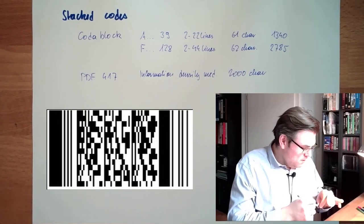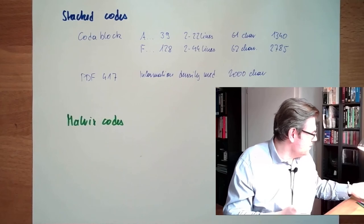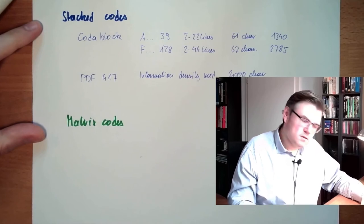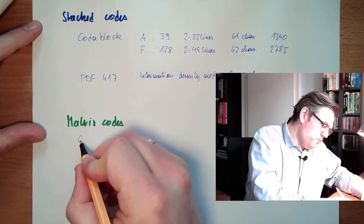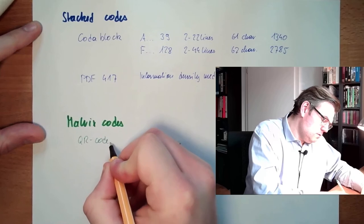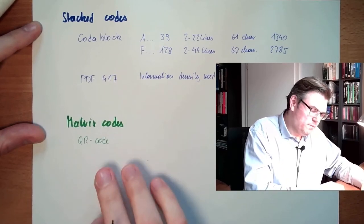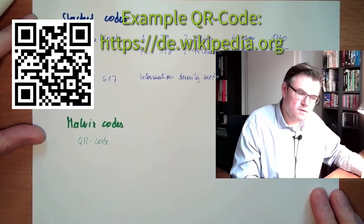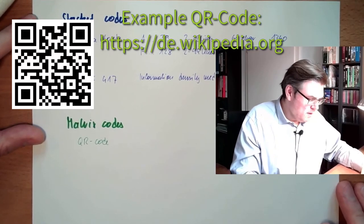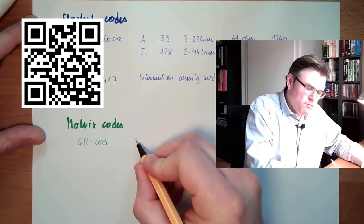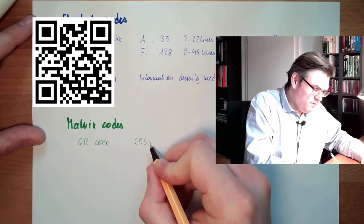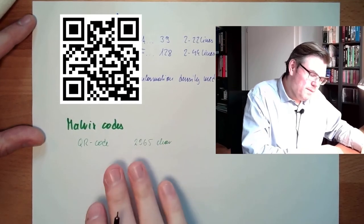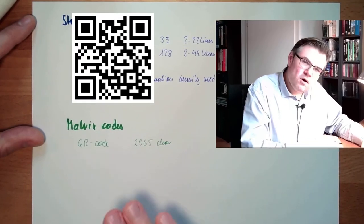One good example of a matrix code, because everybody knows it, is the so-called Quick Response code or QR code. This was developed in Japan by Denso for the manufacturer Toyota. This QR code can code up to 2,965 characters or bytes depending on the error correction level.